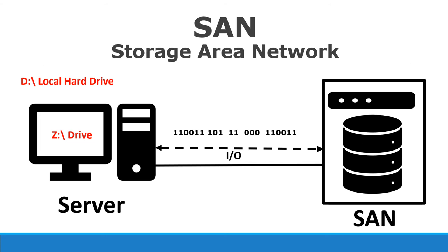The server can store data onto its local hard drive, like a Z drive or D drive. If we talk about IO, only bits and bytes travel over the network. In NAS, the actual file was traveling over the network from the server to the storage, but here, since the file system is with the server, the file is broken into chunks — into file system blocks — and then only bits and bytes of data travel over the network.